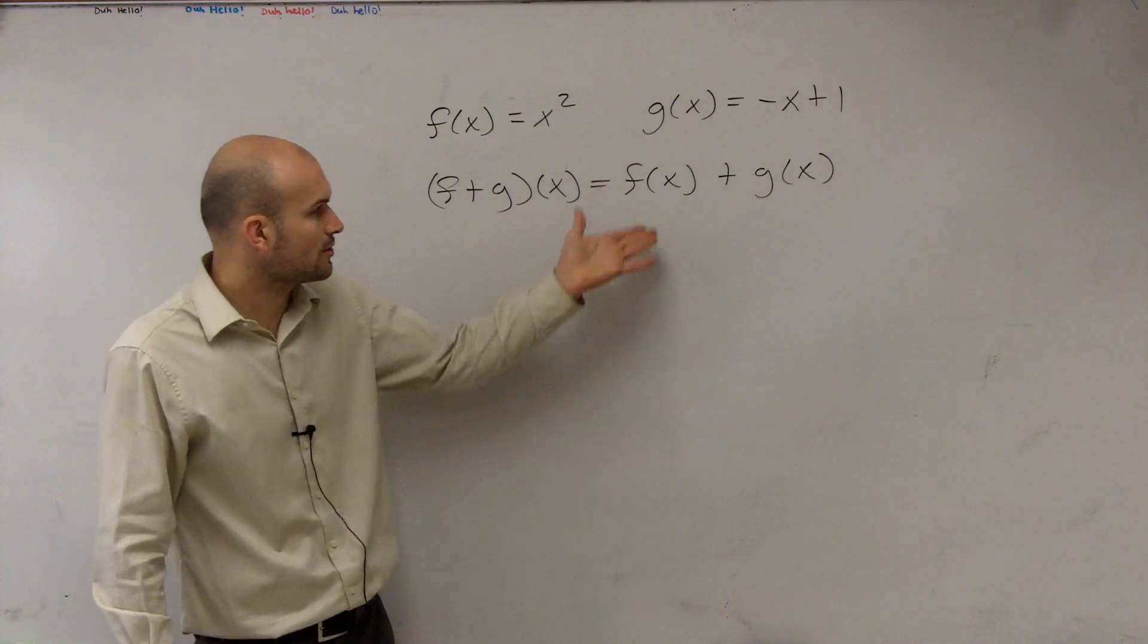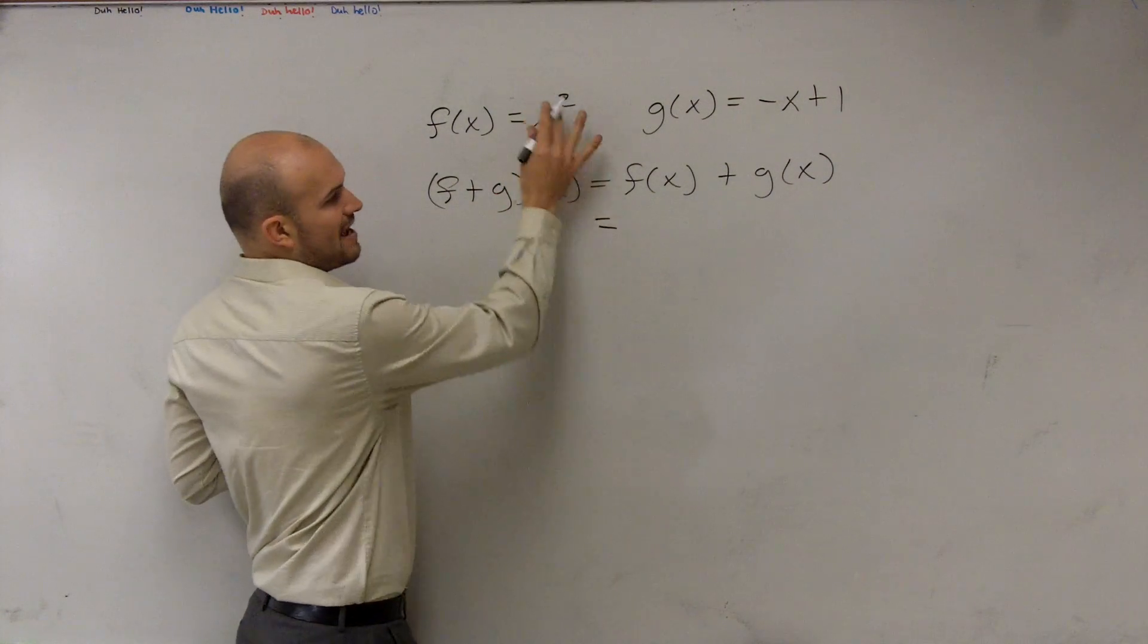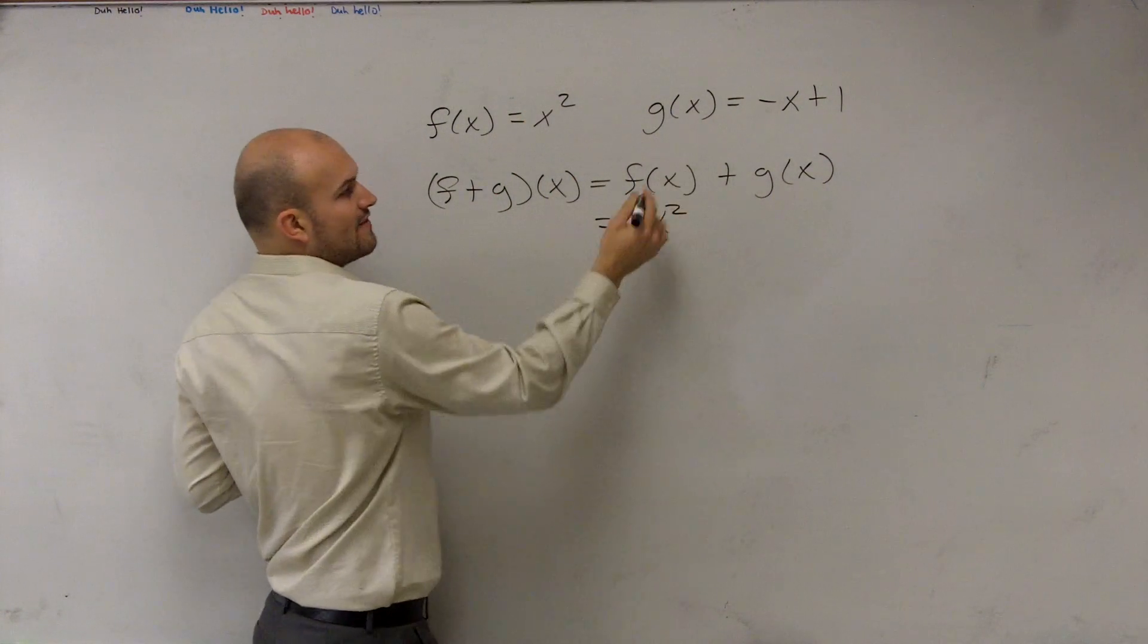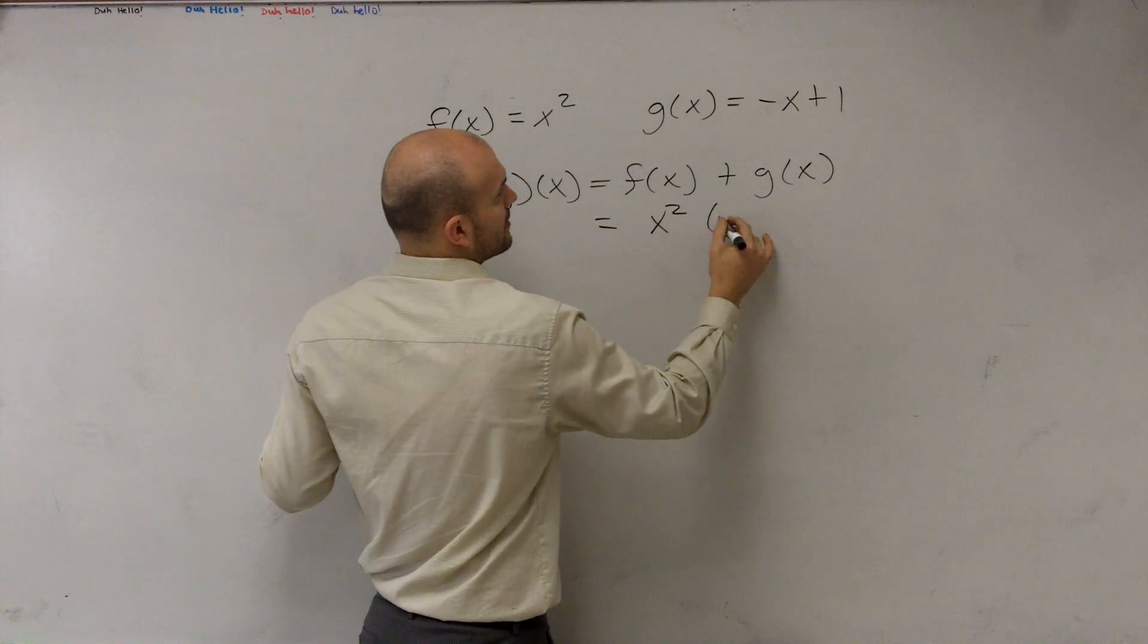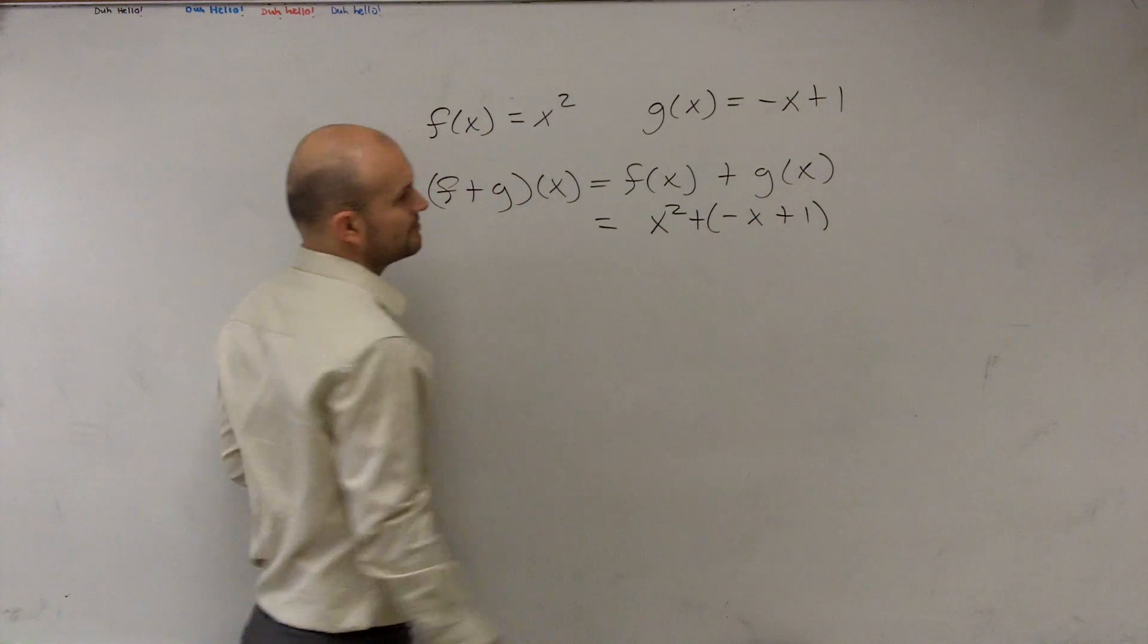So pretty simple, all we're going to do is now evaluate for what is f of x. Well, f of x is x squared. g of x is negative x plus 1.